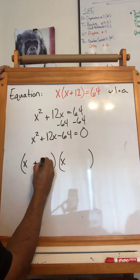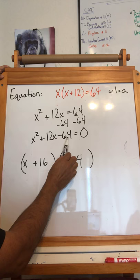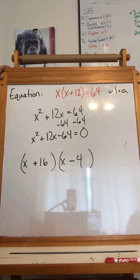My negative number is 4, negative 4. That's because negative 4 times positive 16 equals negative 64. Positive 16 and negative 4 equals 12, okay?